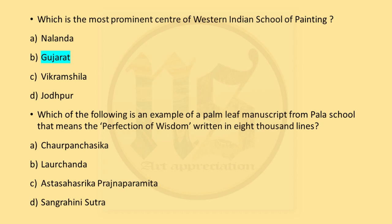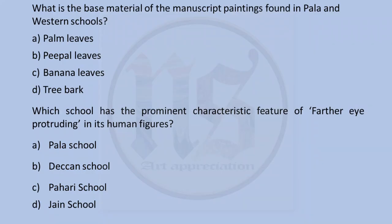Which of the following is an example of a palm leaf manuscript — that means the perfection of wisdom written in 8000 lines? Chorpanshika and Larchan (A and B) were for Central India. Sangrahani Sutra was a Jain text. So we are left with C — Asta Sahasrika Prajnaparamita, which was made under Rampal, the Pal School King, during whose reign this was written and illustrated. What is the base material of the manuscript paintings found in Pal and Western schools? The answer is A — palm leaves.